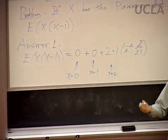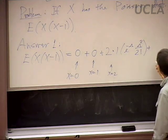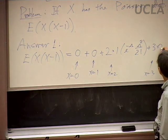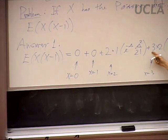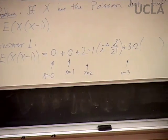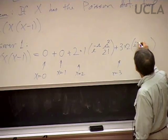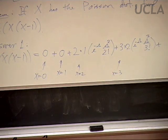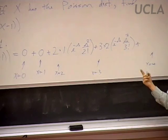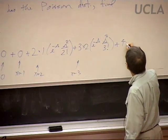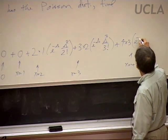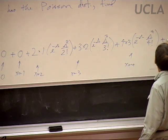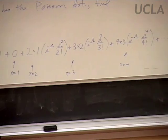We fill in the probabilities we know. Maybe x is three: then x times x minus one is three times two, which is six — and we put in the right probability. One more: four times three, and the probability is e to the minus lambda, lambda to the fourth over four factorial. And so forth ad infinitum. We want to add all these things up.